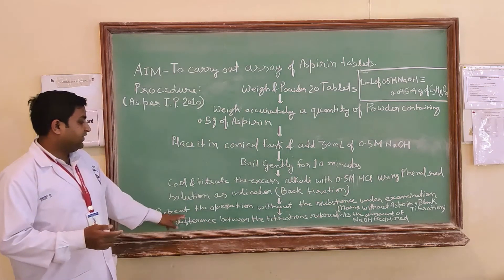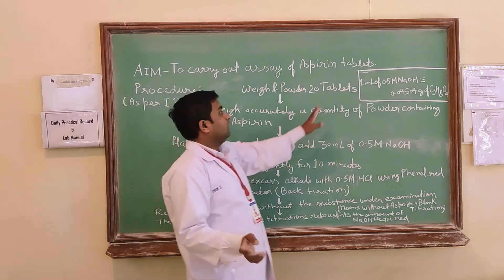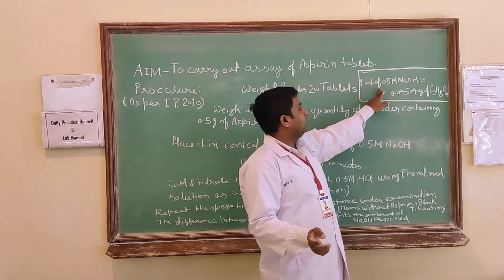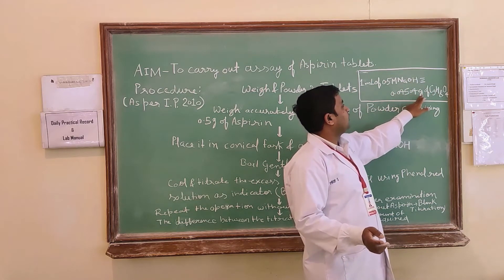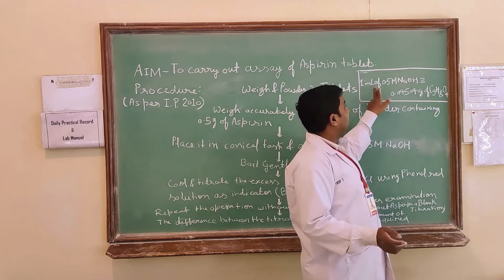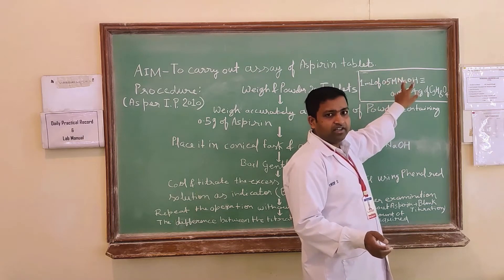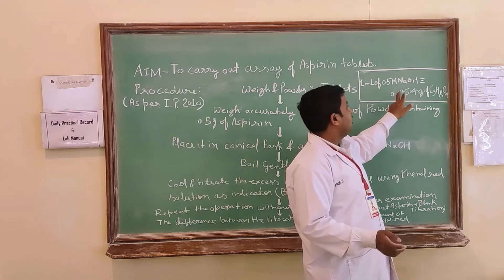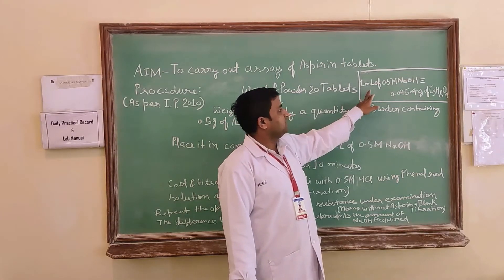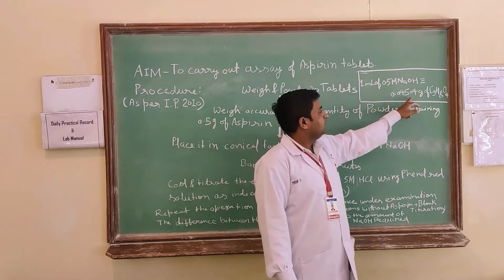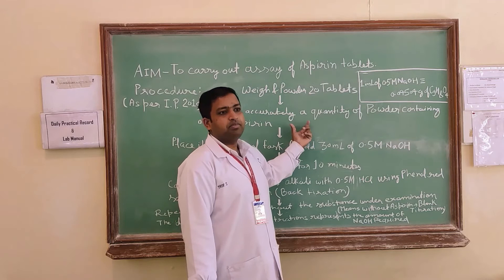Blank titration is to observe the effect of impurity present in solvent, you will perform the blank titration. Then the difference between the titration, both the titrations represent the amount of NaOH required. So ultimately finally 1 ml of 0.5 molar NaOH will be equivalent to 0.04504 gram of aspirin. From this equation you can calculate the amount of aspirin present in 0.5 gram of aspirin which you have taken from the tablets.